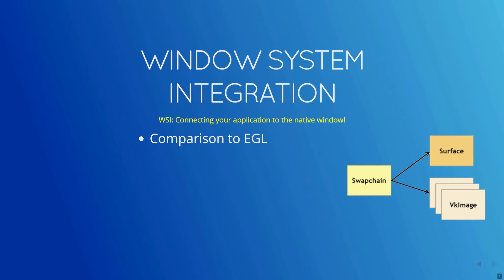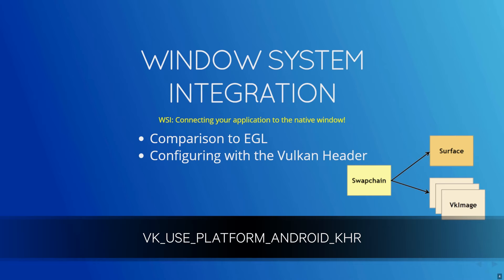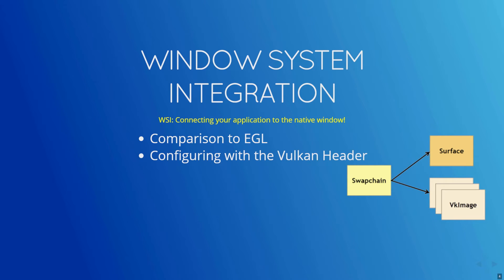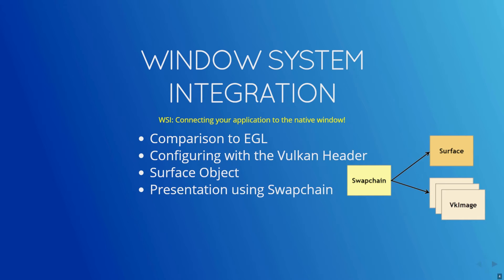In Vulkan, a set of API calls referred to as WSI will serve a similar purpose. WSI stands for Window System Integration. When using the Vulkan API header, you need to first define a preprocessor symbol for the platform you'll be running on — for example, VK_USE_PLATFORM_ANDROID_KHR for an Android build. You'll then be able to create an abstracted surface object. Similar to using EGL, you'll query the surface object for all its supported formats and select an appropriate one. Presentation on the device involves using a swap chain, a series of sequentially ordered images that are rendered to and given to the surface to present.